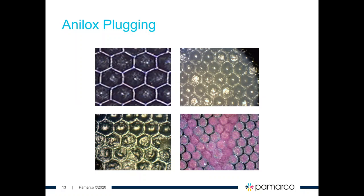What does plugging look like? The prior slide showed engravings that were worn but clean. Here are engravings that aren't necessarily worn but they're contaminated with ink or coating. You can see the buildup in the top right-hand corner and in various areas, buildup in the lower left-hand corner, and cells that are virtually completely plugged in the lower right-hand corner.